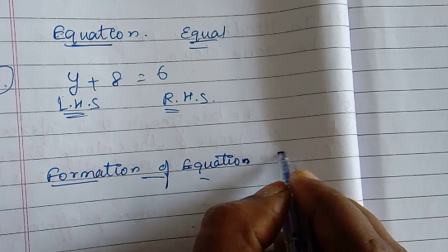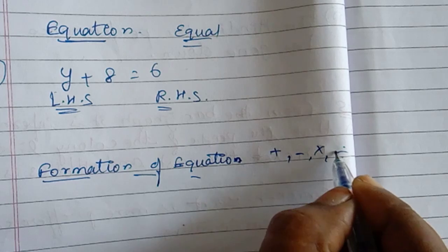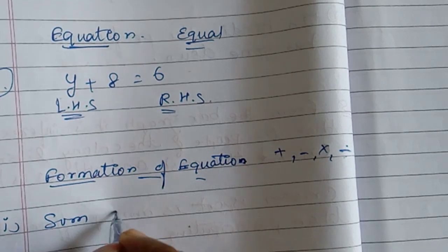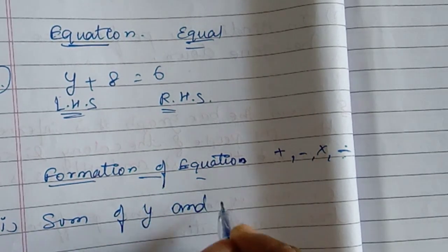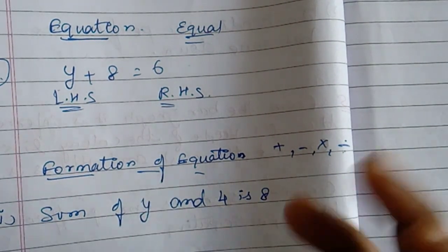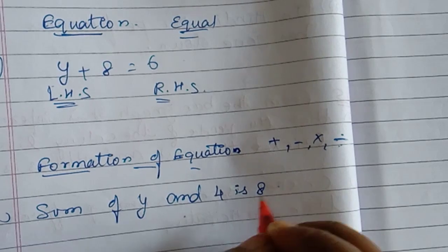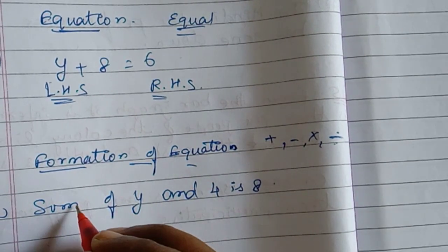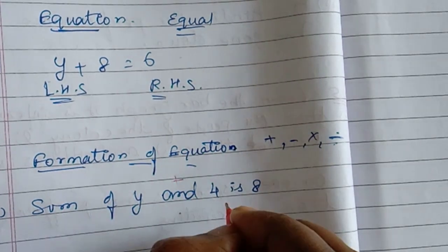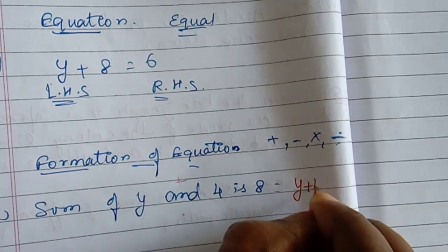We will ask the question. For example, sum, minus, and product. Division — this is the number of equations. For example, here we will add the sentence. There is Y and Y plus 4. If you want to add Y, there is Y plus 4 equal to 8.